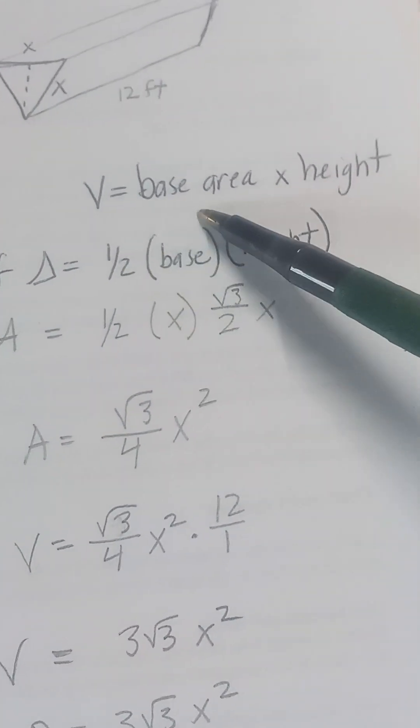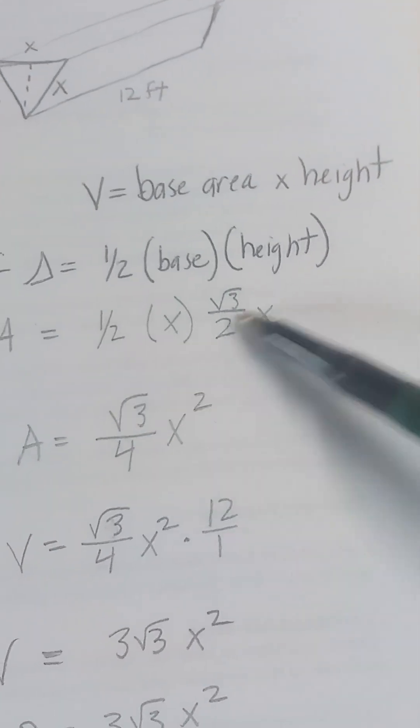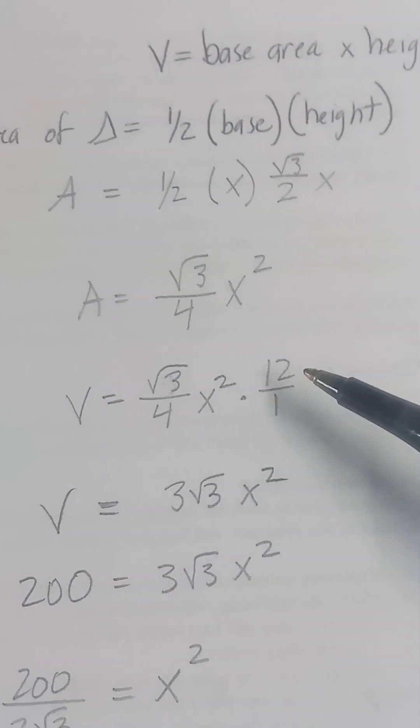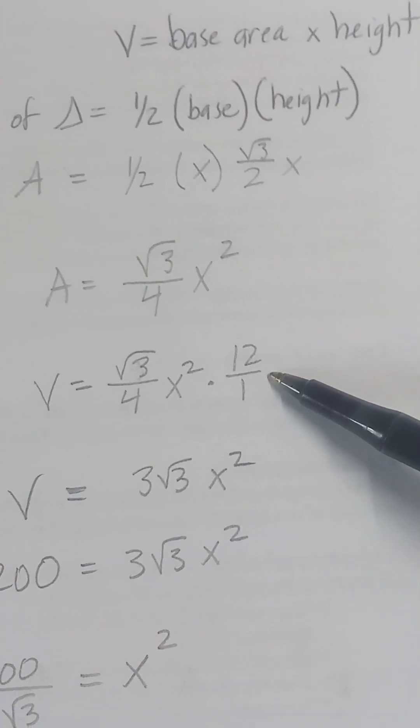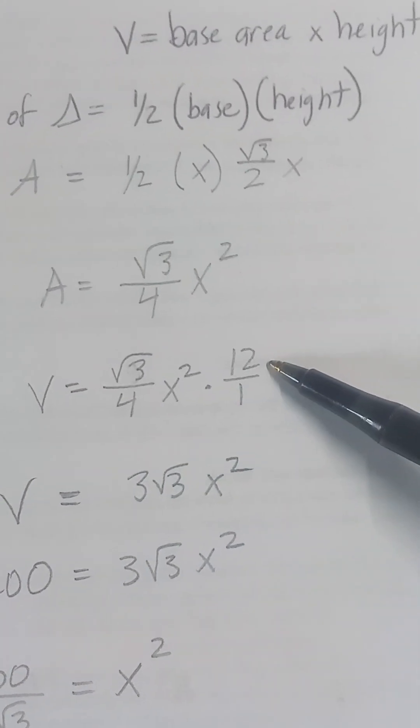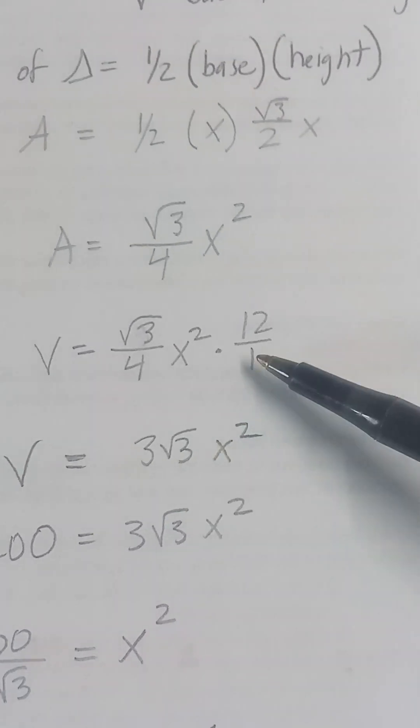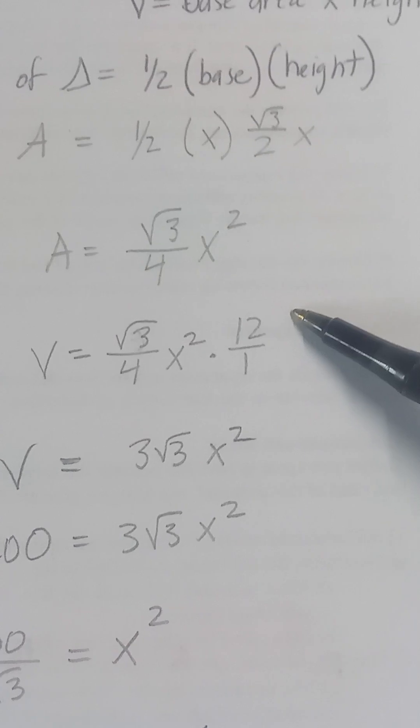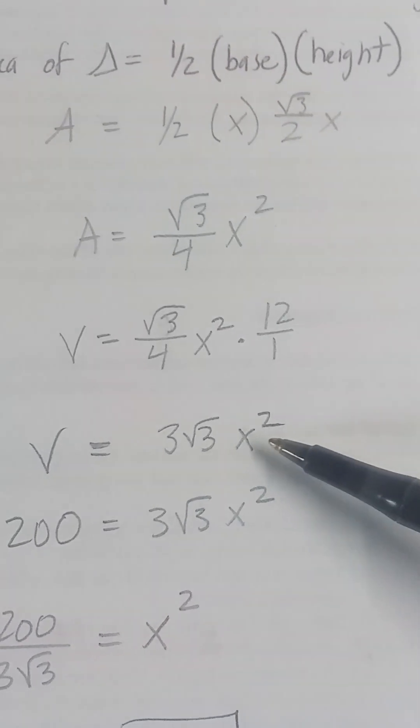That's the area of my triangle, and I multiply that by the height. Base area times height. I'm multiplying by the height which was 12, and the 4 and 12 cancel out and give me 3. So I end up with 3 root 3 X squared. That's my volume.